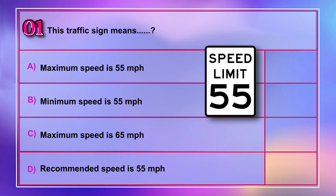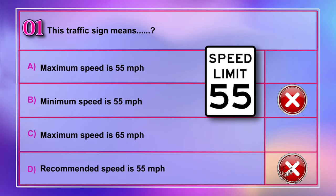Question number 1: This traffic sign means A) maximum speed is 55 miles per hour, B) minimum speed is 55 miles per hour, C) maximum speed is 65 miles per hour, D) recommended speed is 55 miles per hour. Correct answer is A: maximum speed is 55 miles per hour.